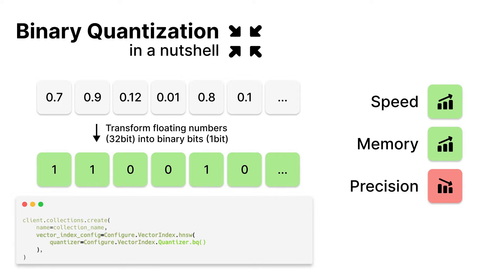In particular, binary quantization refers to the conversion of the float32 values in an embedding to 1-bit values, resulting in a 32 times reduction in memory and storage usage.